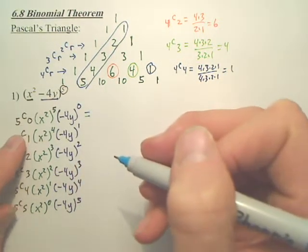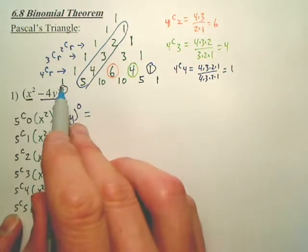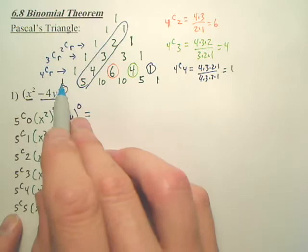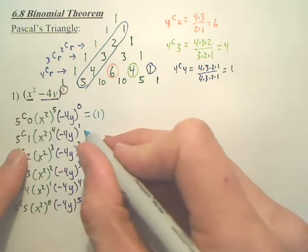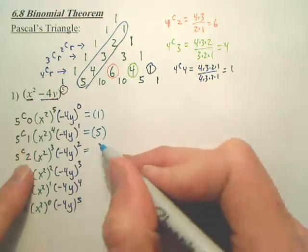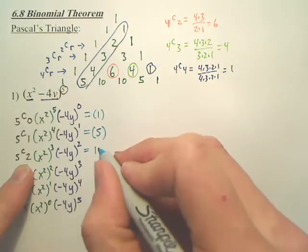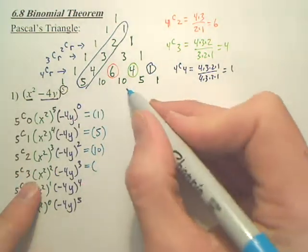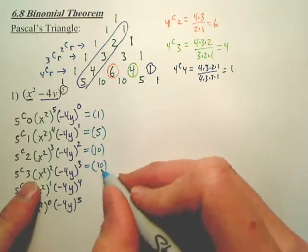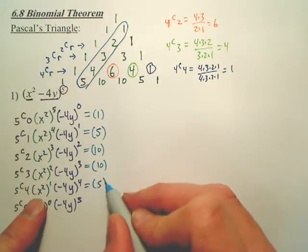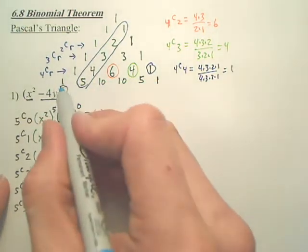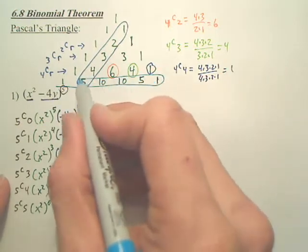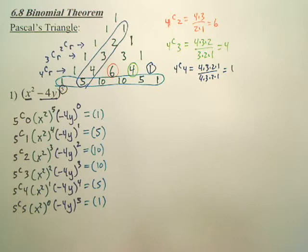What's 5C0? Instead of computing each combination, isn't it quicker to just look at this chart? 5C0 is 1. 5C1 is 5. 5C2 is 10. 5C3 is 10. 5C4 is 5. And 5C5 is 1. Do you see how the chart is very useful? Way easier than doing each combination one by one.